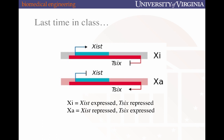Consequently, for each X chromosome, there are two outcomes: the Xi state, in which Xist is expressed and Tsix is repressed, or the Xa state, or active X state, where Xist is repressed and Tsix is expressed. These two outcomes are definitively enforced, even though the choice of which X chromosome to inactivate is random.